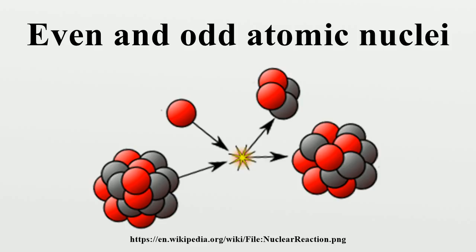There are also 5 primordial long-lived radioactive odd-even isotopes: 87-37-Rb, 115-49-In, 187-75-Re, 151-63-Eu, and 209-83-Bi. The last two were only recently found to decay, with half-lives greater than 10^18 years.